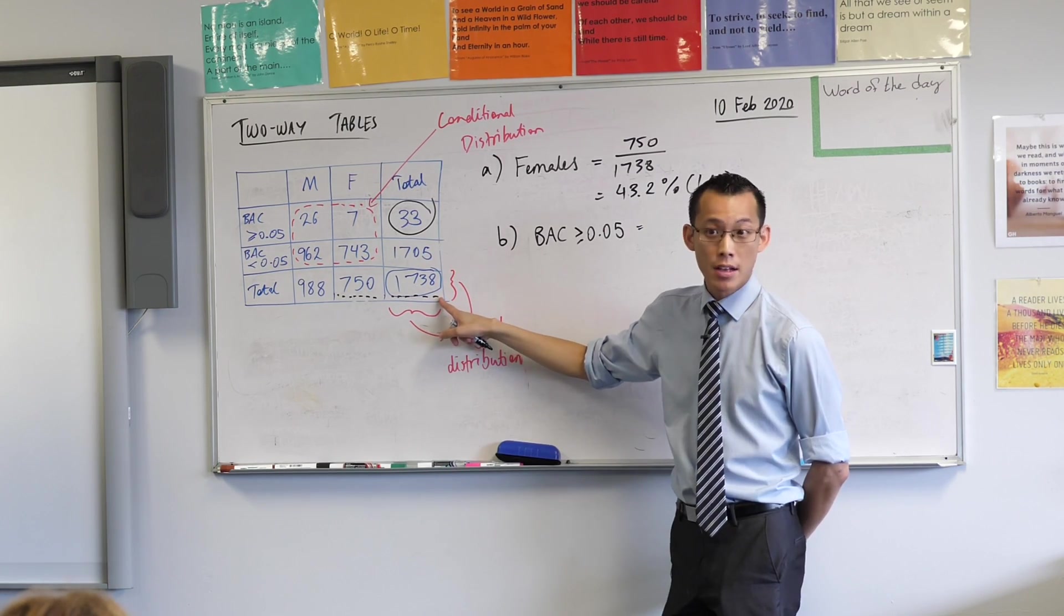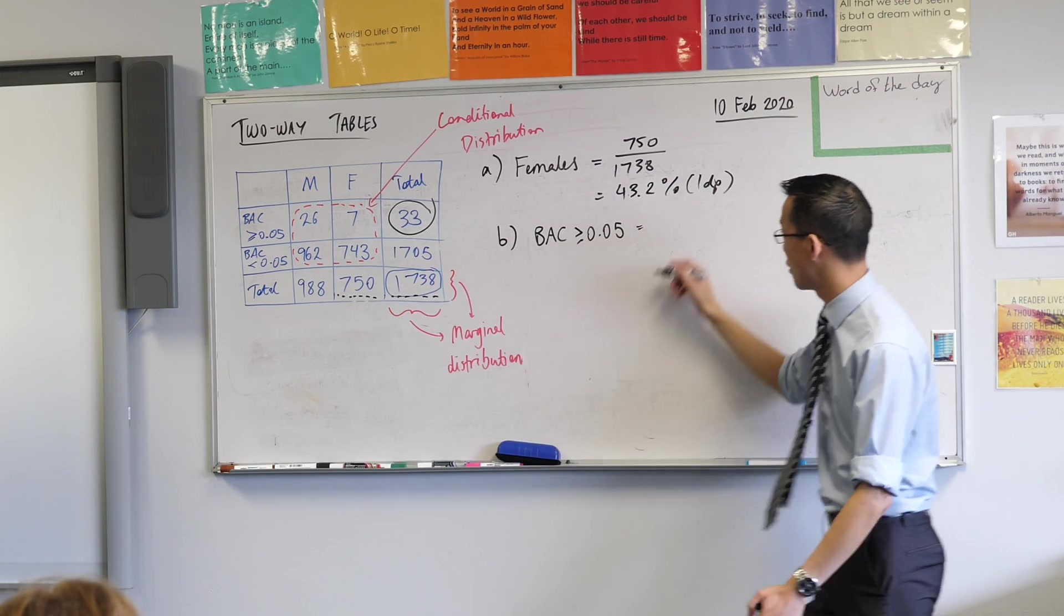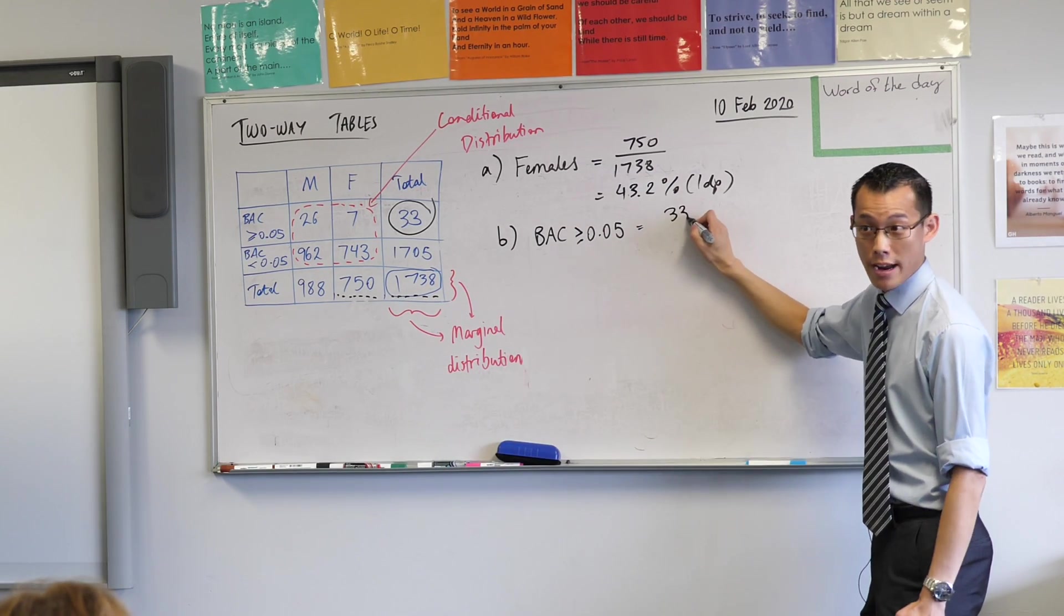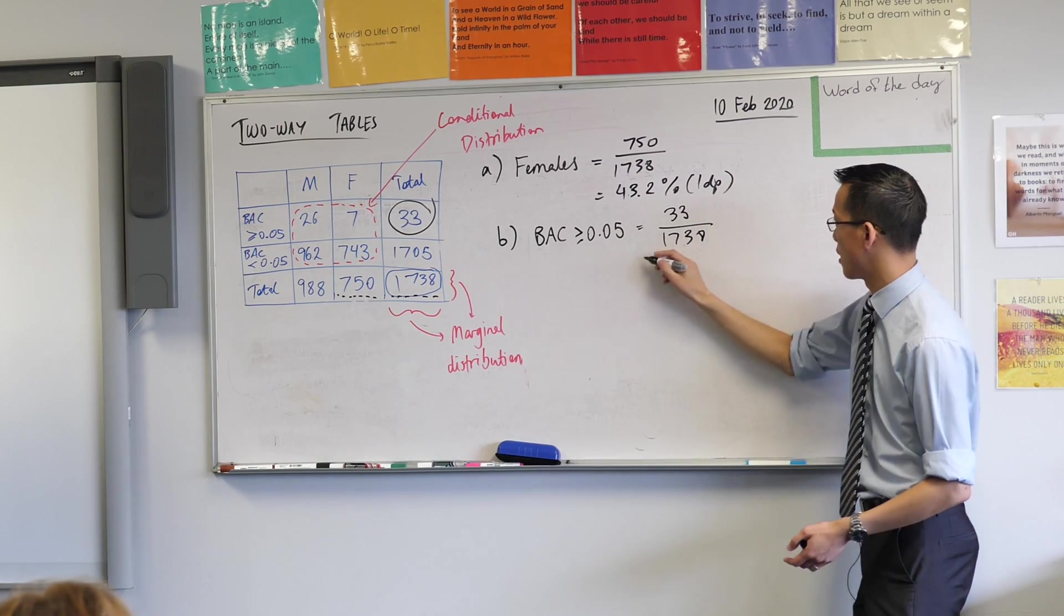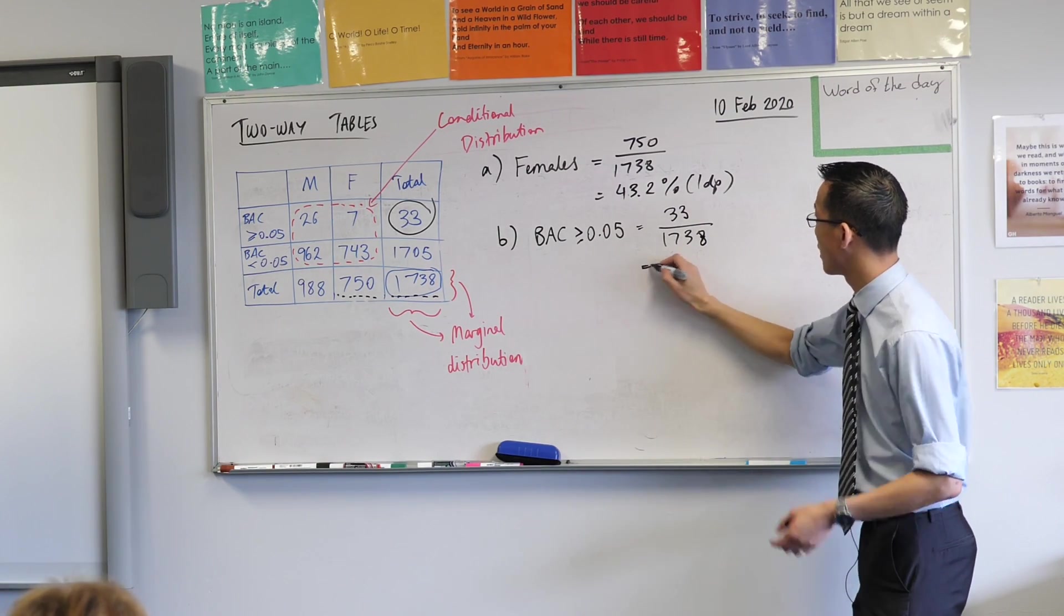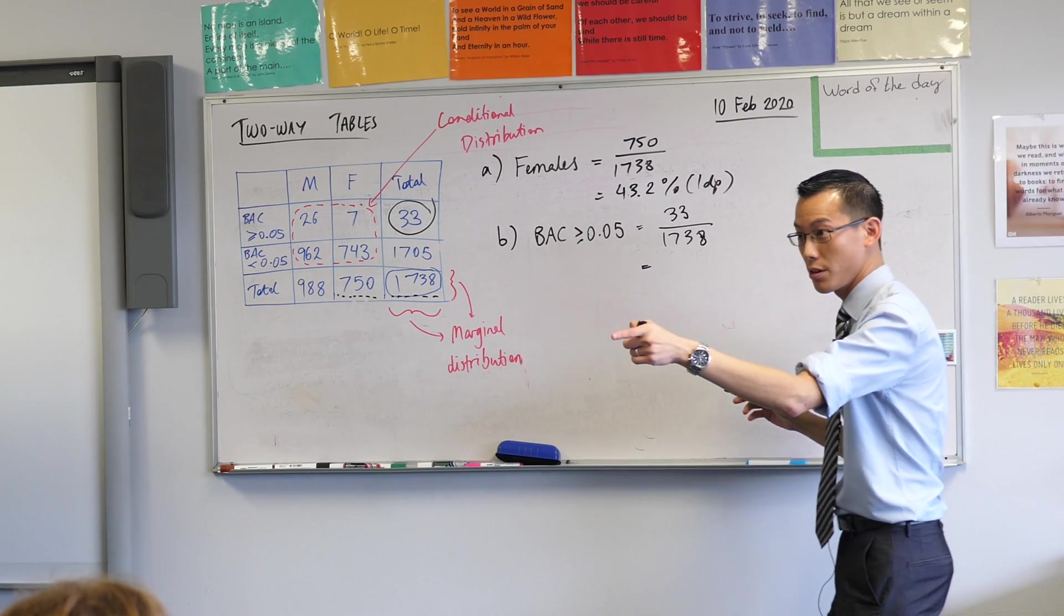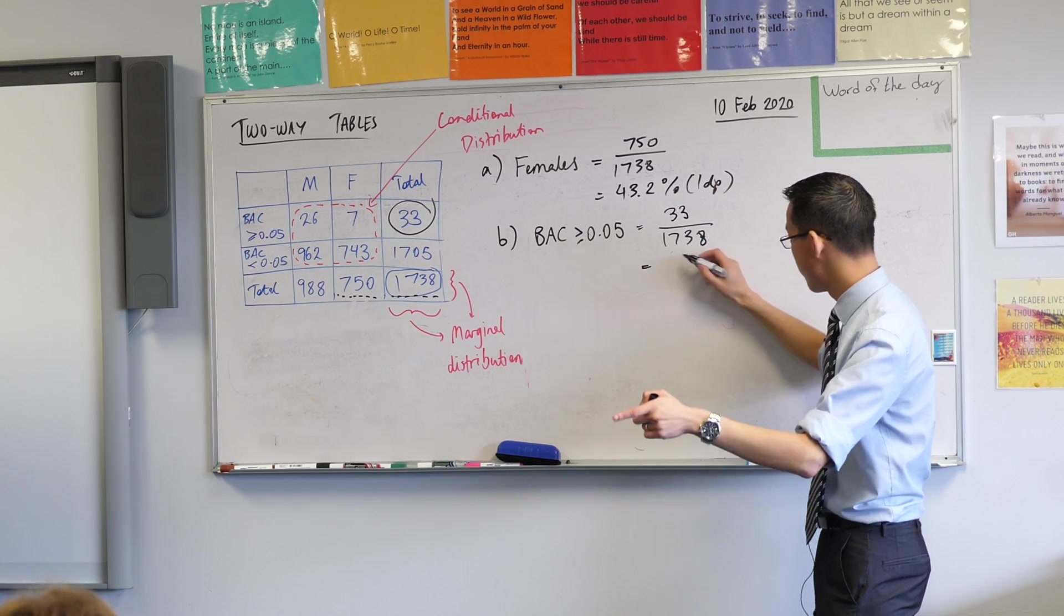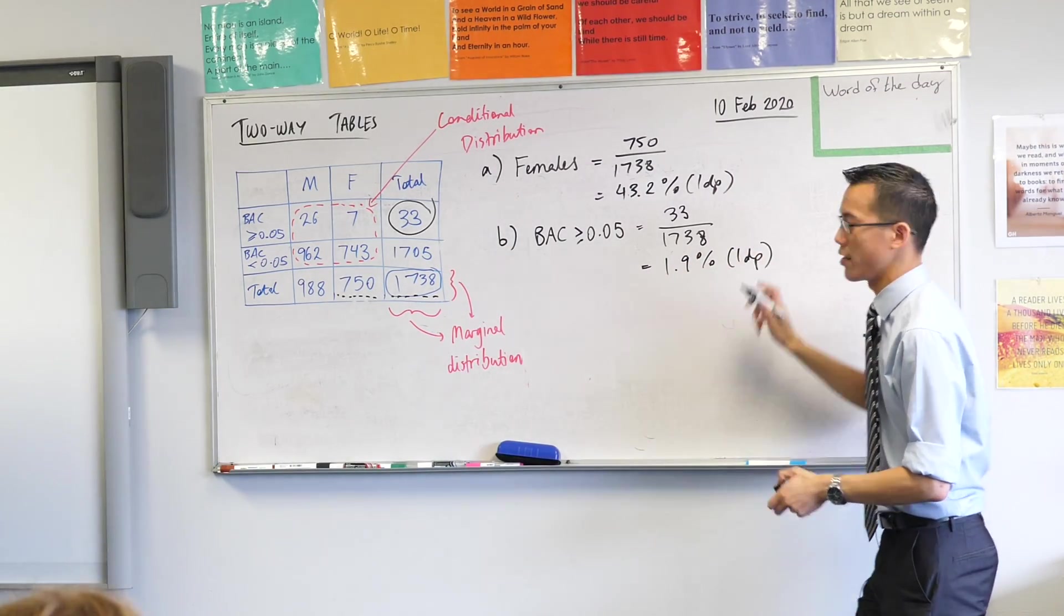Do we reckon it's this number down here? It's how many have gone over of our total population, so it's going to be that 33 over, again, the entire group. 1,738. This will be a considerably smaller proportion. I hope someone calculated the percentage. 1.9? 1.9%. That's to one decimal.